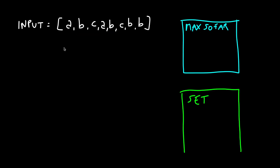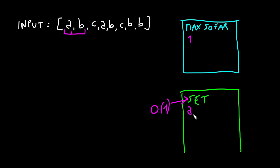There is a better way to solve this problem using sliding windows. We need a variable to save the maximum substring length so far, and a set — we use a set because the contains function runs in O(1) time. Our initial window starts with 'a'; we add 'a' to the set, update our max to one, then slide the window to add 'b', checking whether the new letter is already in the set.